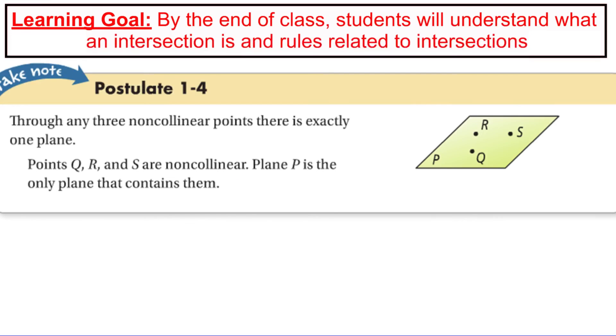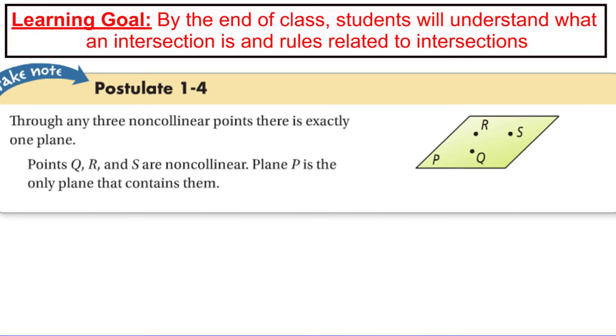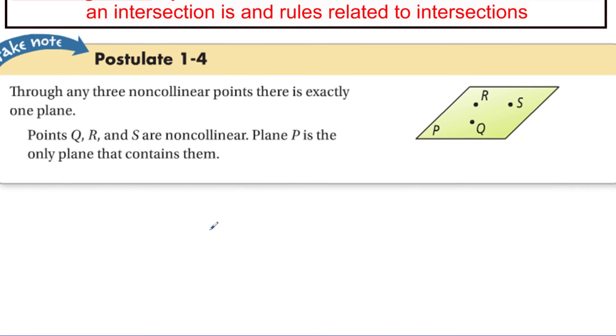So we're going to skip that example and we're going to move on to postulate 1-4. This is our last one. And what it says is through any three non-collinear points, there is exactly one plane. So this is kind of similar to the first one we started off with that said through any two points, there is exactly one line. We're saying the same thing holds true for planes, but if you can draw any three points that are not in a straight line, that that's going to encompass one whole plane.